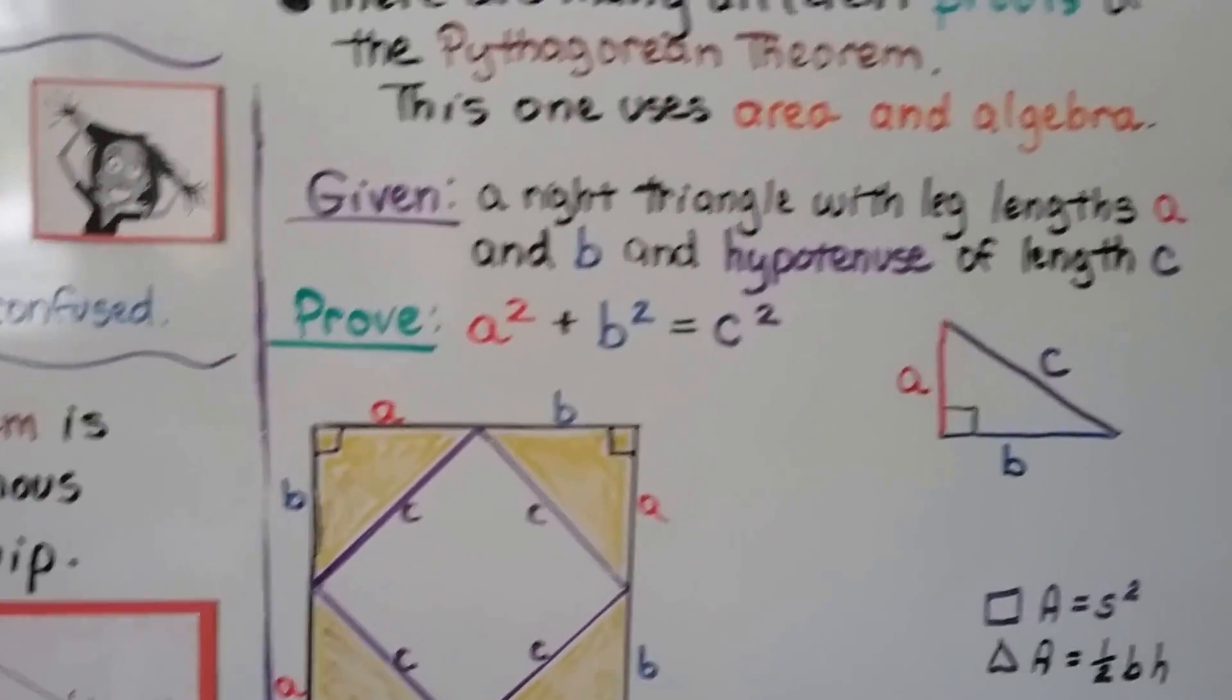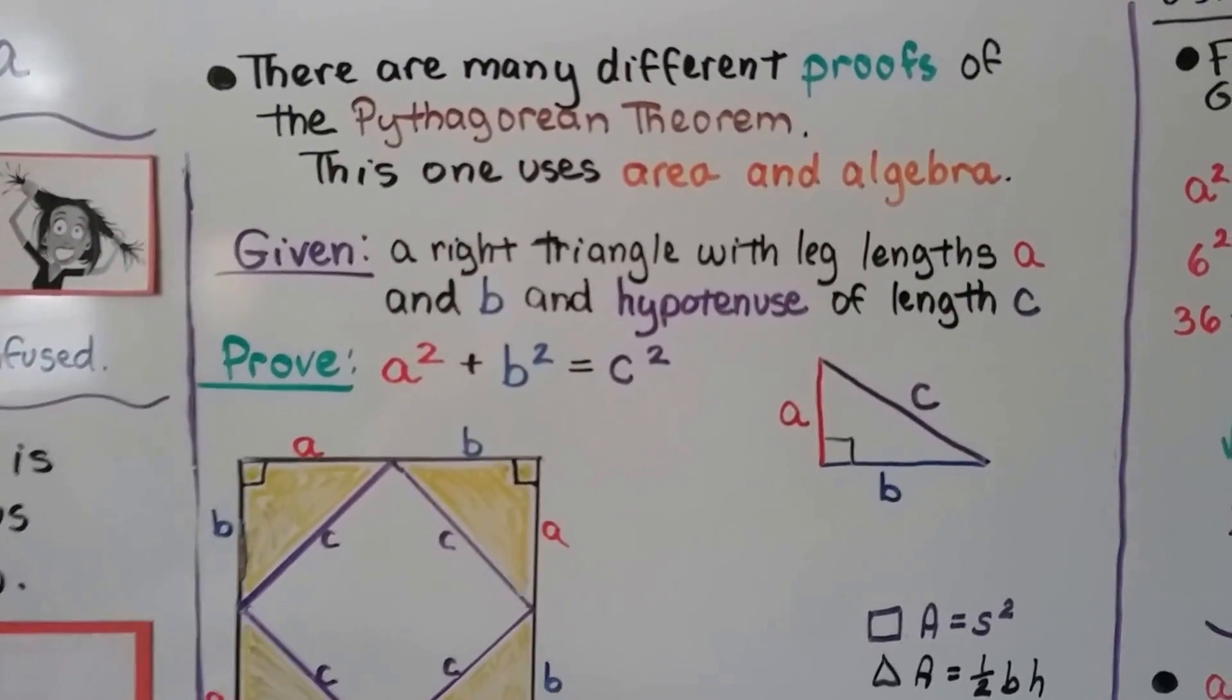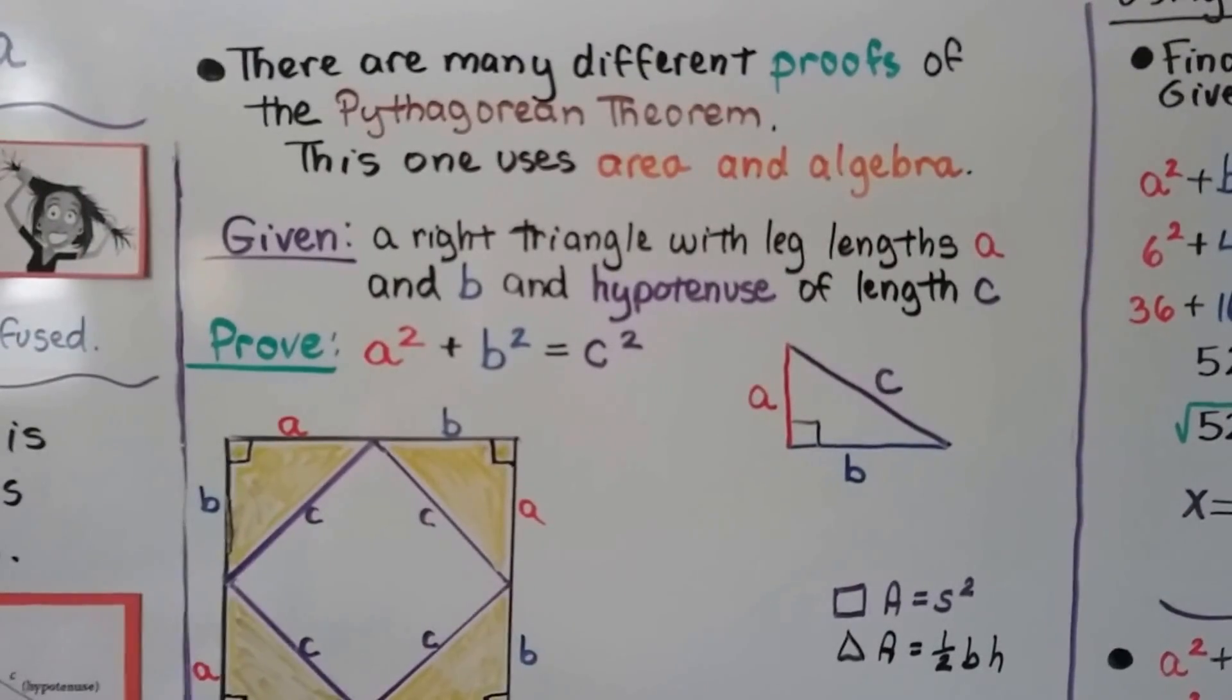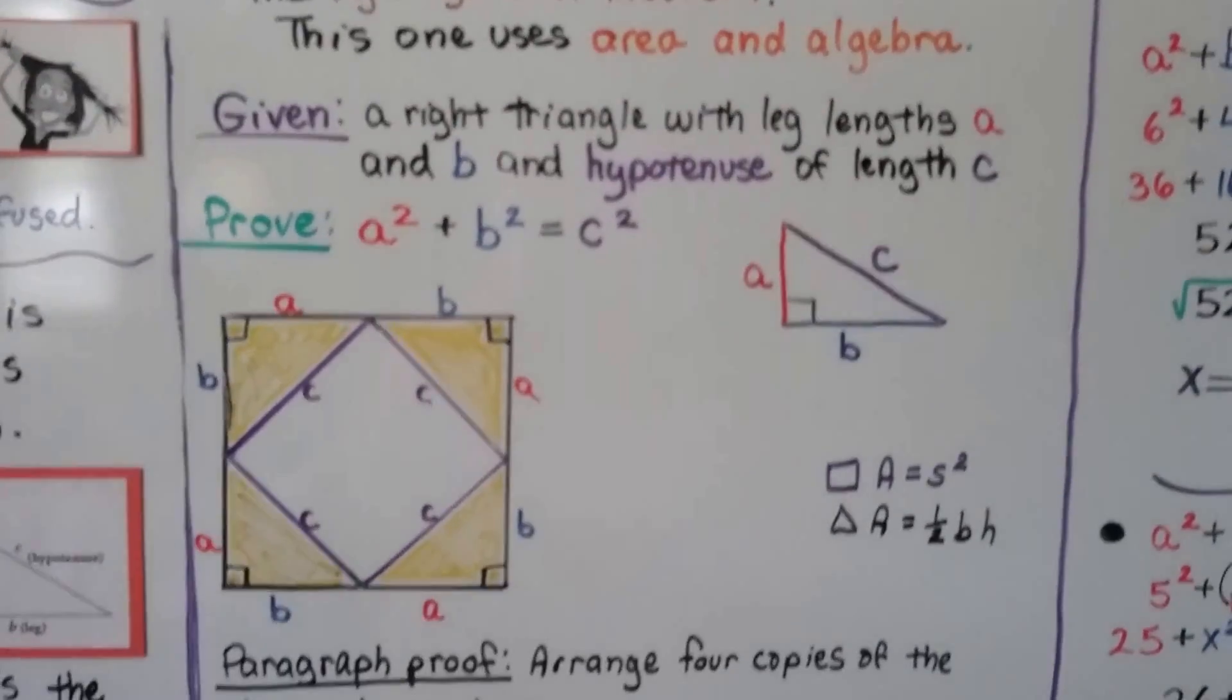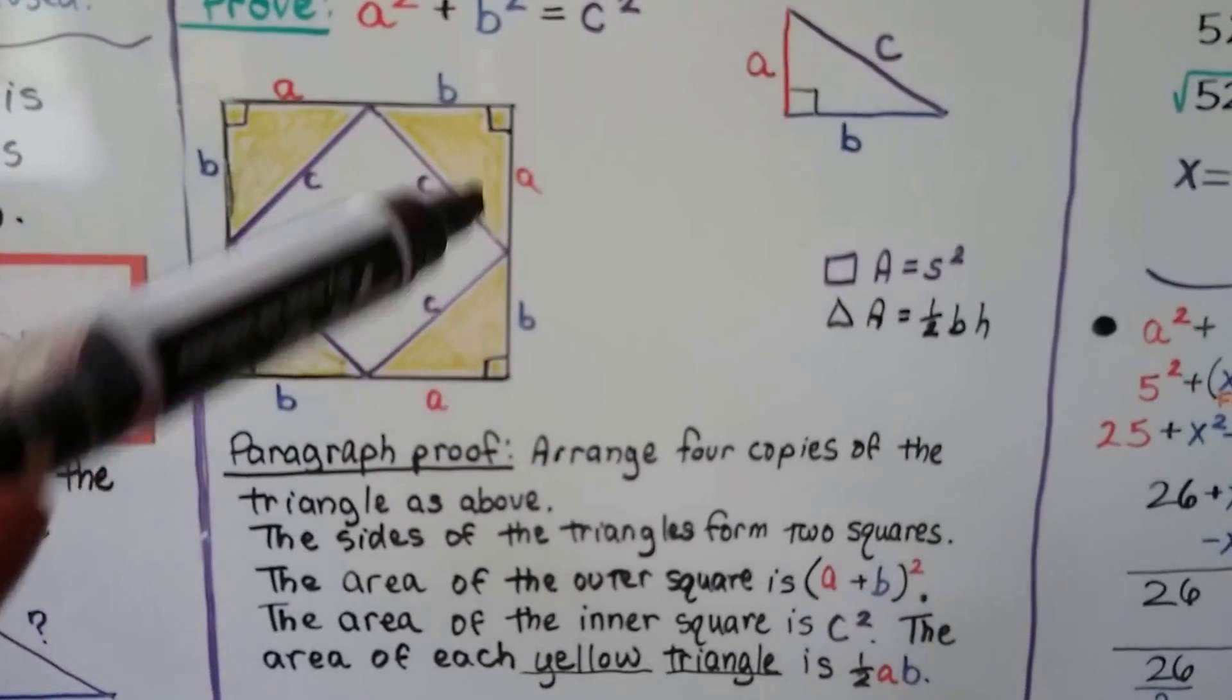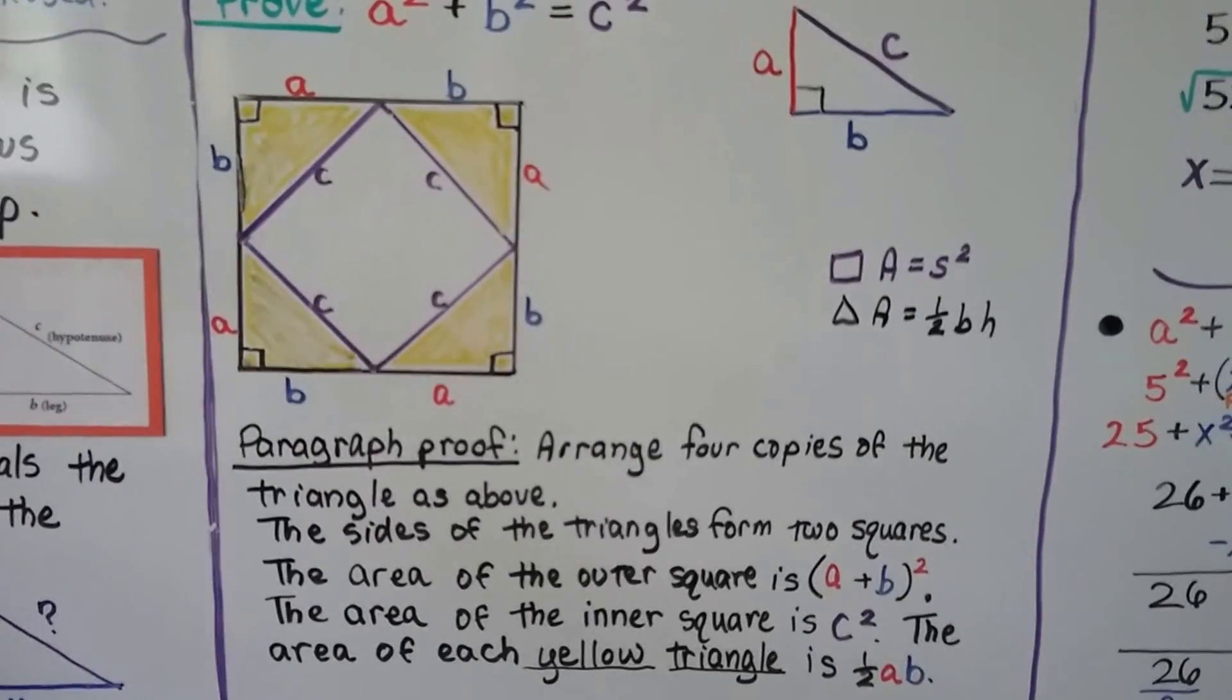There's many different proofs of the Pythagorean Theorem, and this one uses area and algebra. So we're given a right triangle with leg lengths a, b, and the hypotenuse of length c. We need to prove a squared plus b squared equals c squared. Take a look at this drawing. You might see a yellow square with a white square inside, but you can also look at this as four yellow triangles with their hypotenuses forming the square inside.